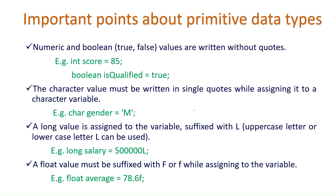Some important points to remember about primitive data types: for numeric types, you declare like 'int score = 85'. For boolean, we don't use any quotes — just true or false. For char, you must use single quotes when assigning a value. For long values, you must suffix with a small l or capital L — both are acceptable.